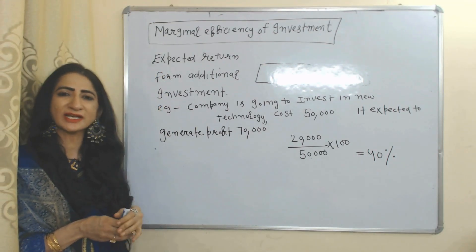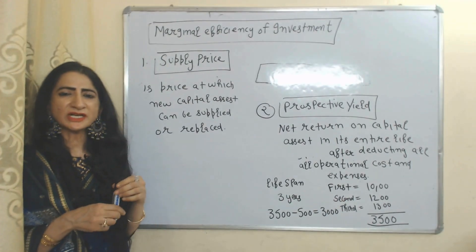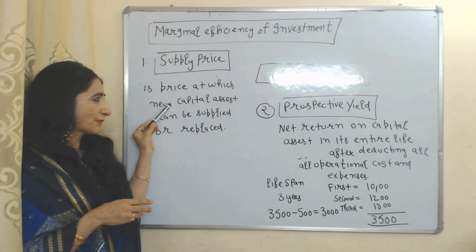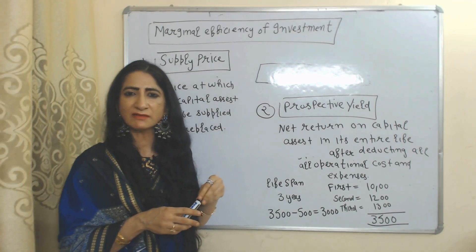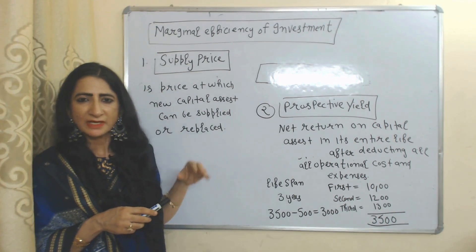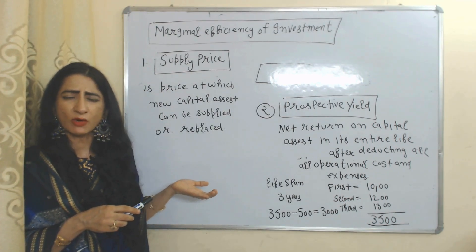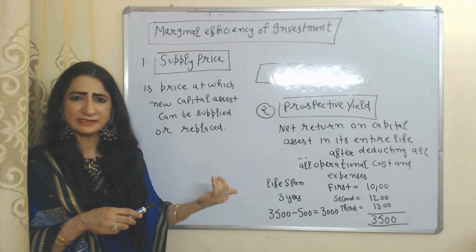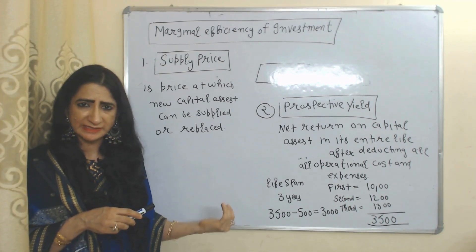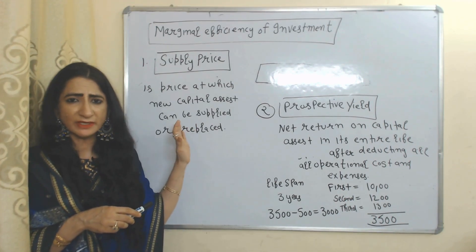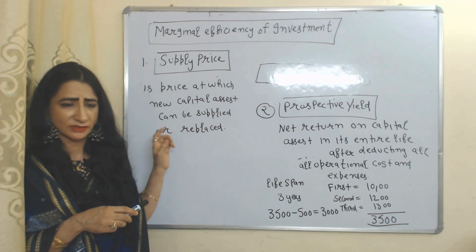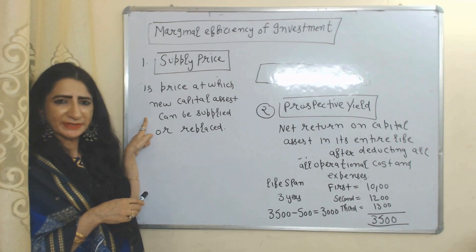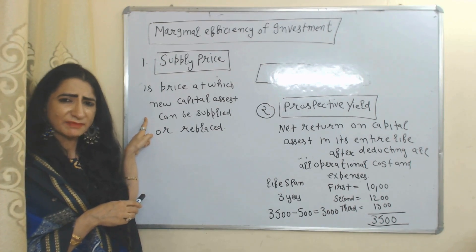Marginal efficiency of investment mainly depends on two things: supply price and prospective yield. Supply price is simply the cost of producing or supplying a new asset, or the cost of replacing an existing asset. Supply price is the price at which a new capital asset can be supplied or replaced.